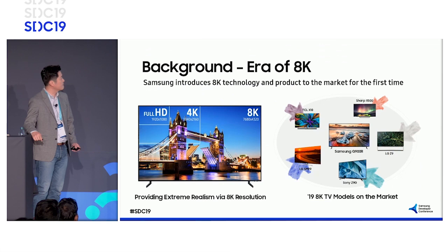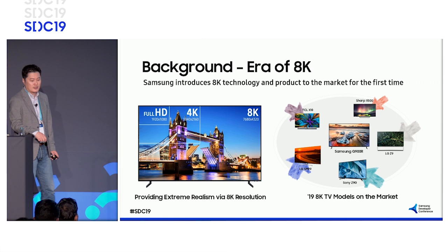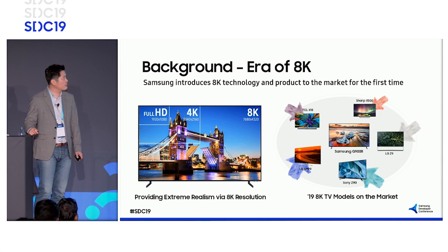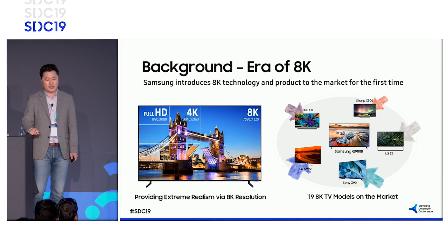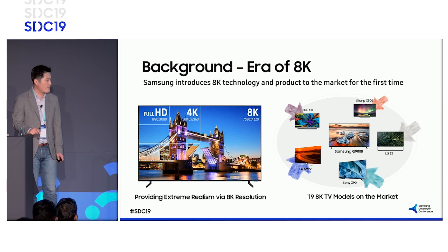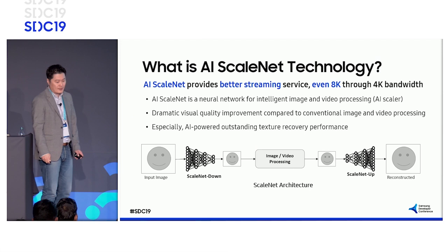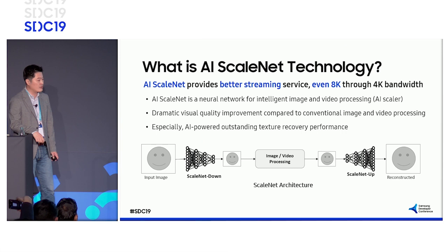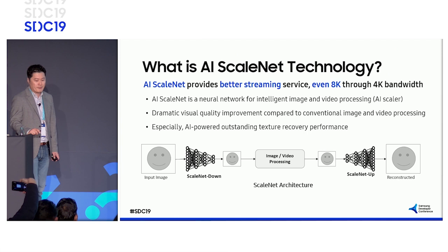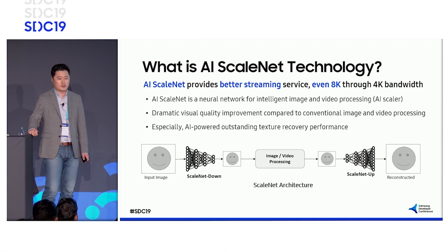You have just listened to a kind of tutorial on 8K production and streaming from Byungun. As he explained, Samsung is trying its best to deliver 8K content to consumers to provide an extreme realism experience. On top of these backgrounds, I will introduce our new technology called ScaleNet, which enables 8K content delivery through 4K bandwidth, powered by AI neural network technology. ScaleNet also provides better streaming service experience even at lower resolutions.